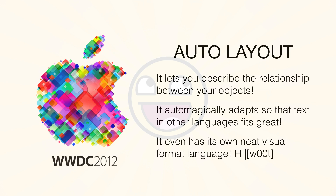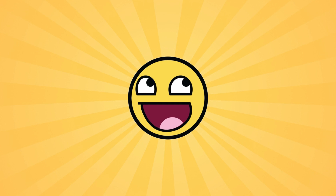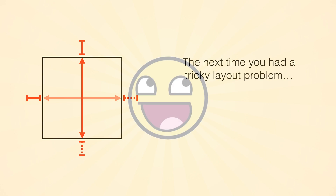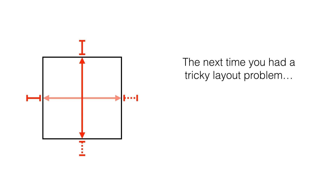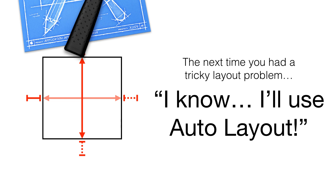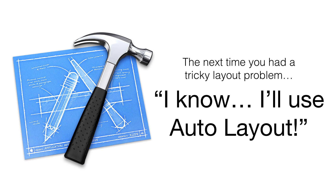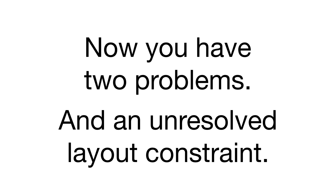Best of all though, Apple's example code looked super easy. You could look at them and say, yeah, this looks fantastic. So when you got home after the conference, you almost certainly thought, like me: I'm facing quite a hard layout problem — I know, I'll use auto-layout to solve this. And now, almost certainly, you have two problems and an unresolved layout constraint.